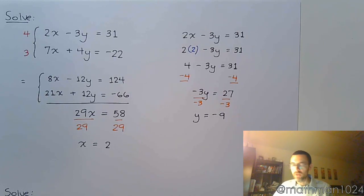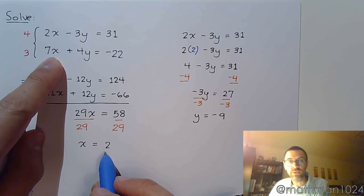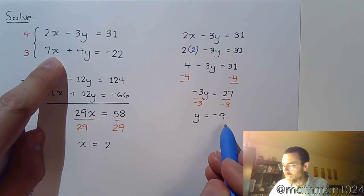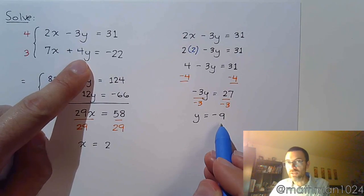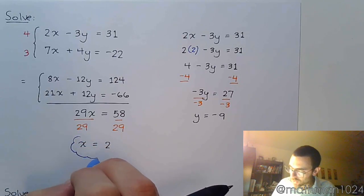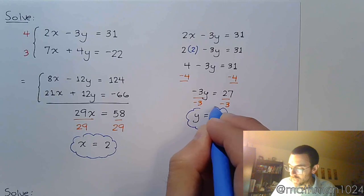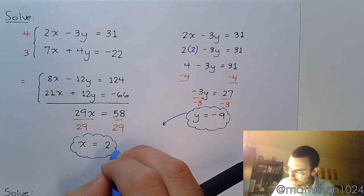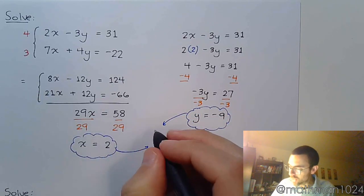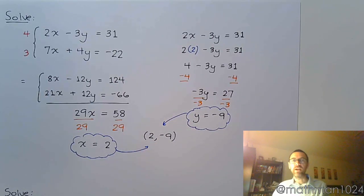And y is equal to negative 9. All right and again we can easily check things to make sure that everything works out the way that it's supposed to. If I plug in 2 here, so 7 times 2 is 14, negative 9 times 4 is negative 36. So 14 minus 36 is negative 22. So everything works out. Everybody's happy. As long as we write our solution as the ordered pair (2, -9).